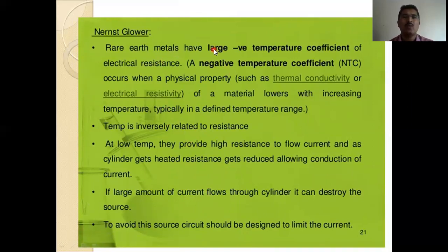Nernst glower, rare earth metals have large negative temperature coefficient of the electrical resistance. A negative temperature coefficient, that is NTC, occurs when a physical property such as thermal conductivity or electrical resistivity of the material lowers with increasing temperature, typically in a defined temperature range. Temperature is inversely related to the resistance. At low temperature, they provide high resistance to flow current, and as the cylinder gets heated, resistance reduces allowing the conduction of current. If large amount of current flows through the cylinder, it can destroy the source. To avoid this, a circuit should be designed to limit the current.